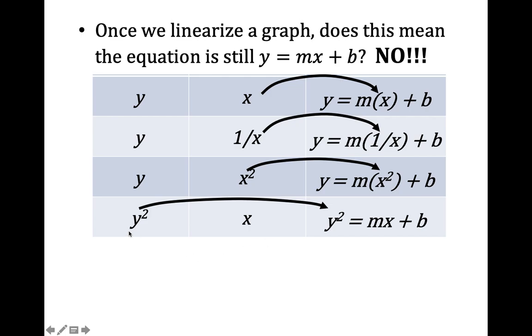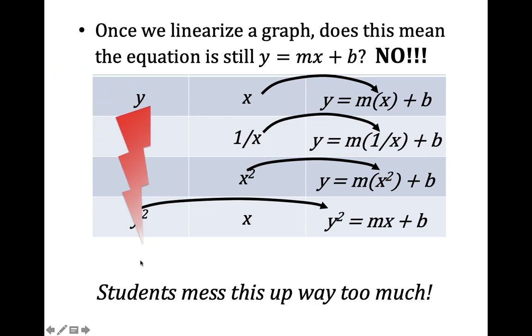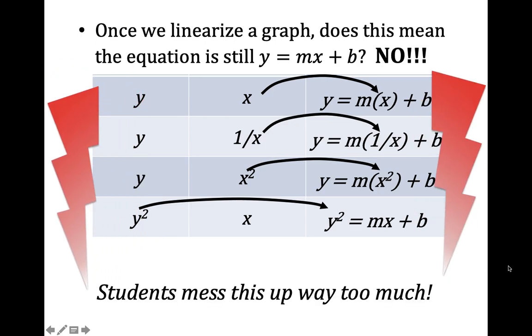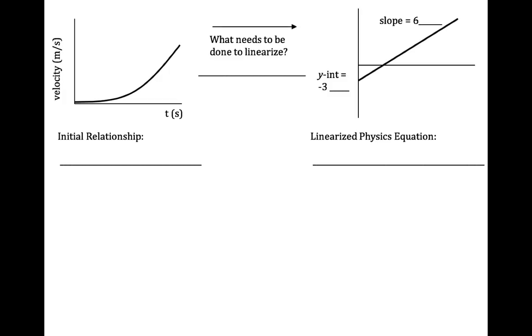If we graph something y squared versus x and then we just write y equals mx plus b, that is not the right equation that matches the graph because the graph has a y squared on it. Students mess this up way too much so you've got to be careful about that. Alright, so this page should be somewhere in your packet and maybe in a reference packet or maybe in your main packet but you should find that before continuing.